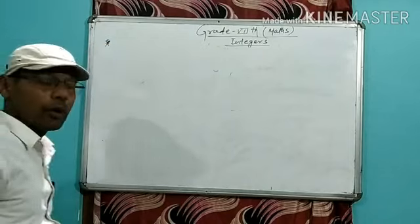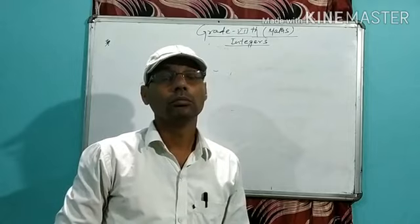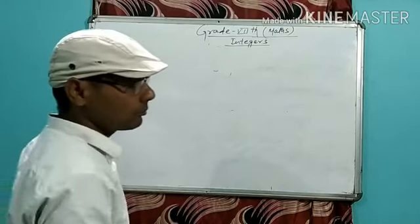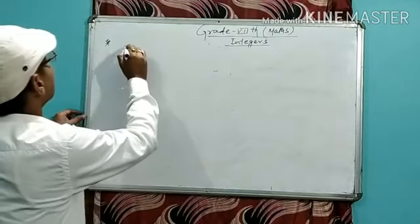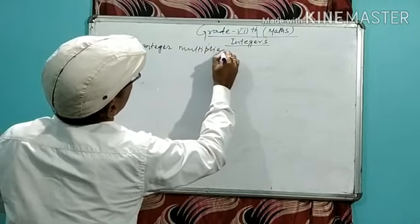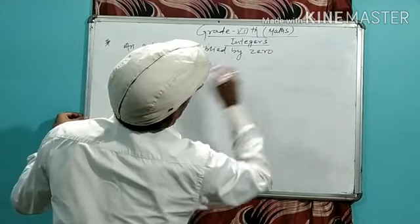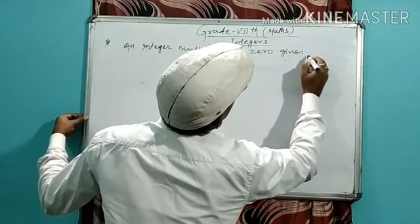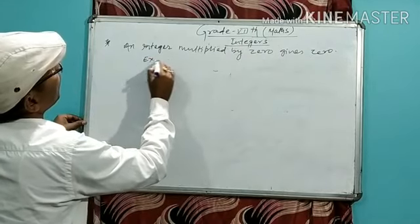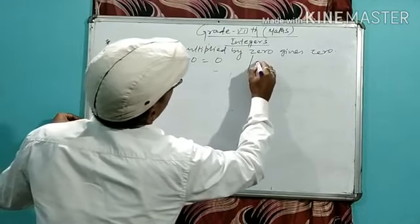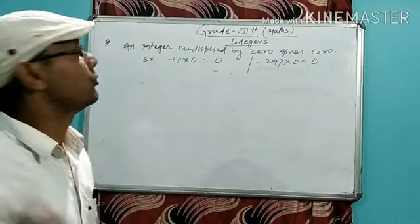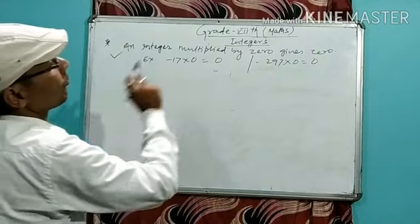When we multiply any integer by 0, we get the result 0. Any integer multiplied by 0 gives 0. For example, minus 17 into 0 equals 0, and minus 297 into 0 also equals 0. This is multiplication by 0.